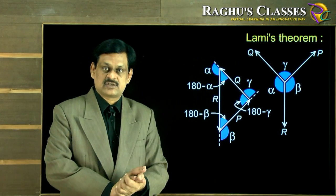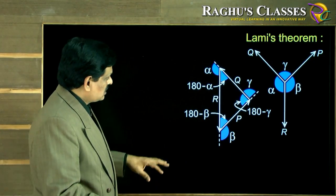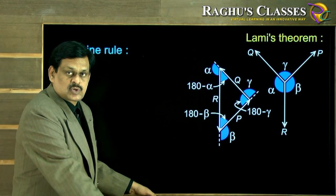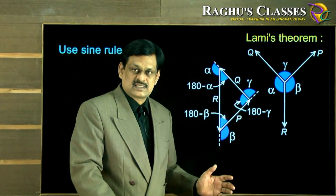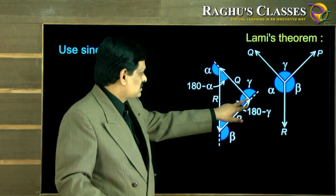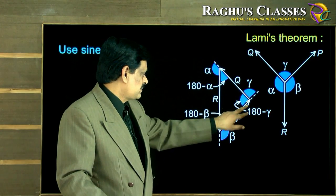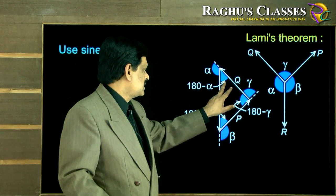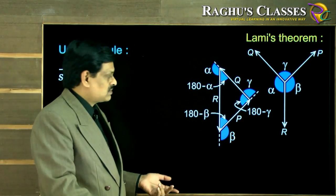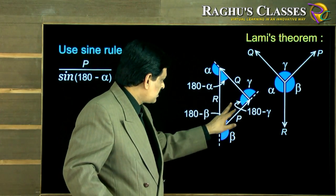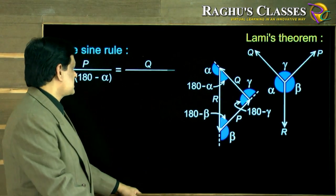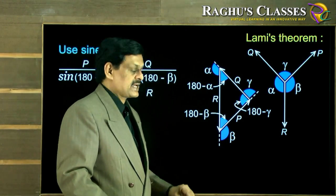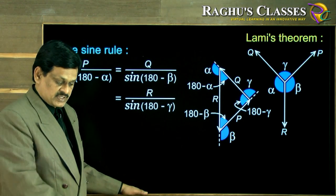As per the law of triangle of forces, the three forces keeping a particle in equilibrium are represented by the three sides of a triangle. Applying the sine rule: P / sin(180 − α) = Q / sin(180 − β) = R / sin(180 − γ), from fundamental trigonometry.